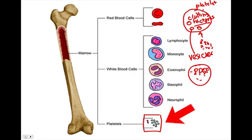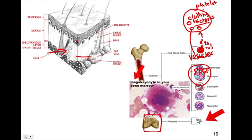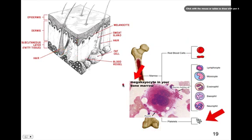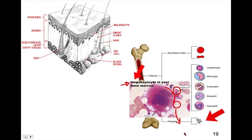Where do platelets come from? They come from the bone marrow. Inside the bone marrow there is a cell called a megakaryocyte. Megakaryocytes have a process where they will pinch off — bud off — pieces of the cell, and those become platelets that head out from the bone marrow into the blood. That's where platelets come from; they're made by megakaryocytes pinching off a portion of the cell.